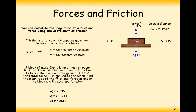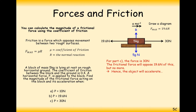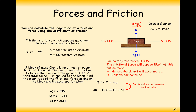When the force on the right is 30 newtons, it exceeds the maximum frictional force of 19.6, so the particle accelerates. Resolving horizontally: 30 minus 19.6 equals 5 times A. Subtracting and dividing by 5 gives an acceleration of 2.08 metres per second squared.